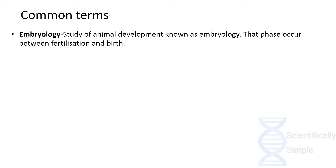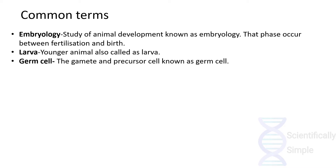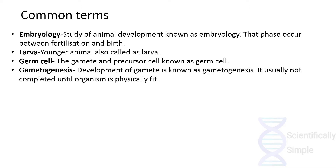Before starting, let's go through some common terms used in developmental biology. Embryology is the study of animal development and the phases that occur between fertilization and birth. Larva is used to denote a younger animal. The germ cell is the gamete and the precursor cell for the gametes. Gametogenesis is the development of gametes, and this process does not occur in an organism that is not physically fit or an adult.